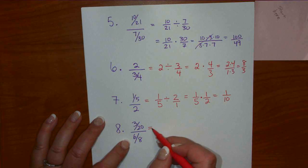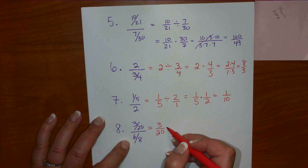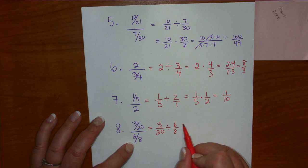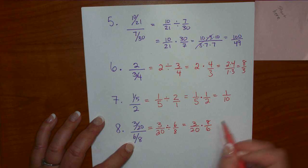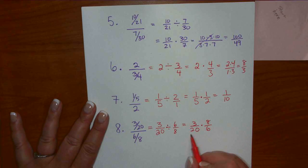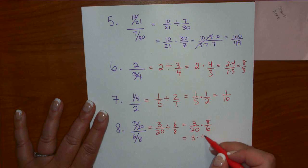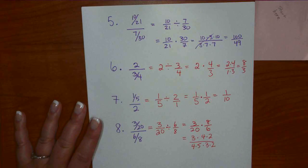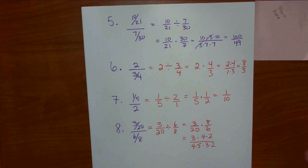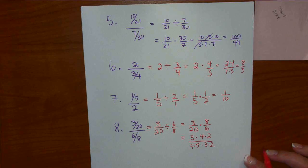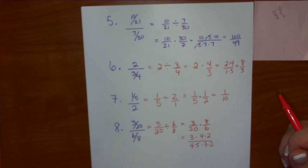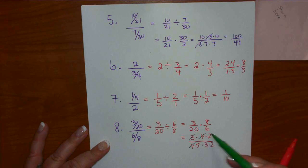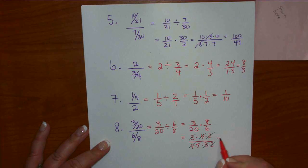The last example before we add variables: 3 over 20 divided by 6 over 8. Flip over the second one and multiply: 3 over 20 times 8 over 6. Now this one does simplify. 3 times 8 is 4 times 2, 20 is 4 times 5, and 6 is 3 times 2. The 4s cancel, a 3 cancels, a 2 cancels, and we're left with nothing on top — which is 1 — and 5 on the bottom: 1 over 5.